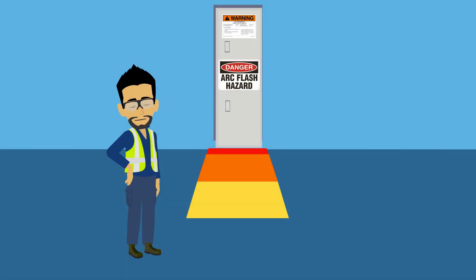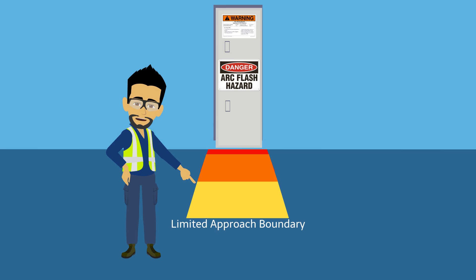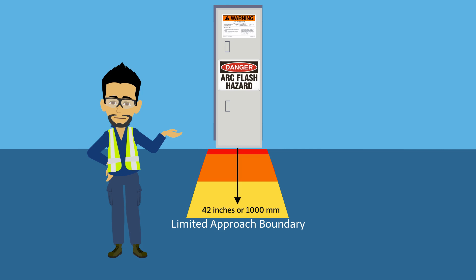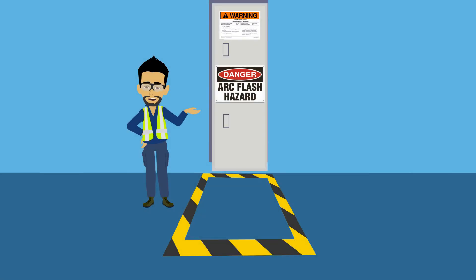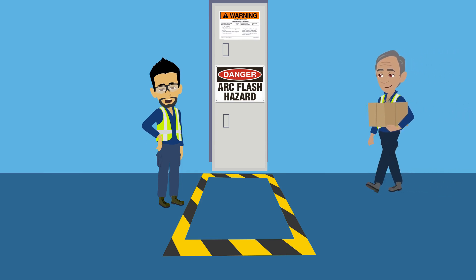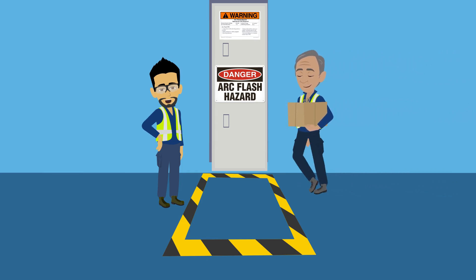The limited approach boundary is the minimum safe distance from an energized system for unauthorized personnel, materials, and objects. Based on 480 volts, this is 42 inches or 1000 millimeters from electrical equipment. This boundary is indicated by floor demarcation adjacent to the electrical panels, and any unauthorized personnel or objects within this area contravenes OSHA and NEC guidance.